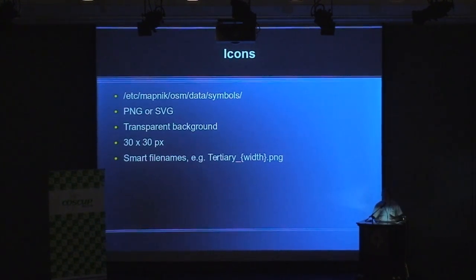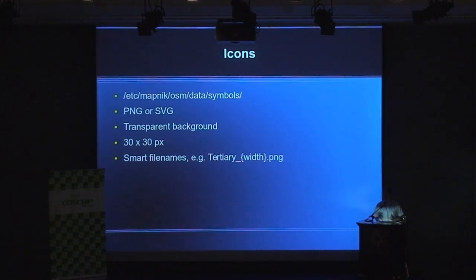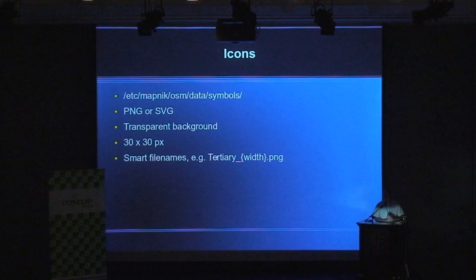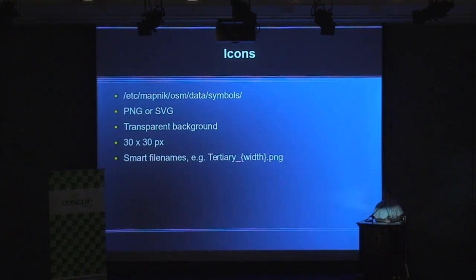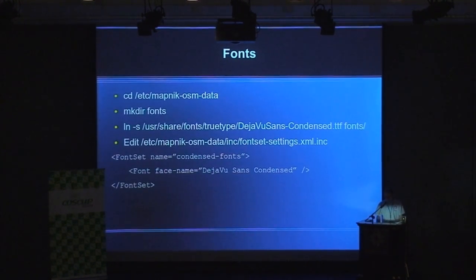For example, based on the length of the data — how many characters the data we want to display has — we can have different images with different sizes to match those different cases. So we would create an image like 'tertiary_3' for a tertiary road with a three-character reference number, and use a placeholder in the OSM style sheet to refer to this file.